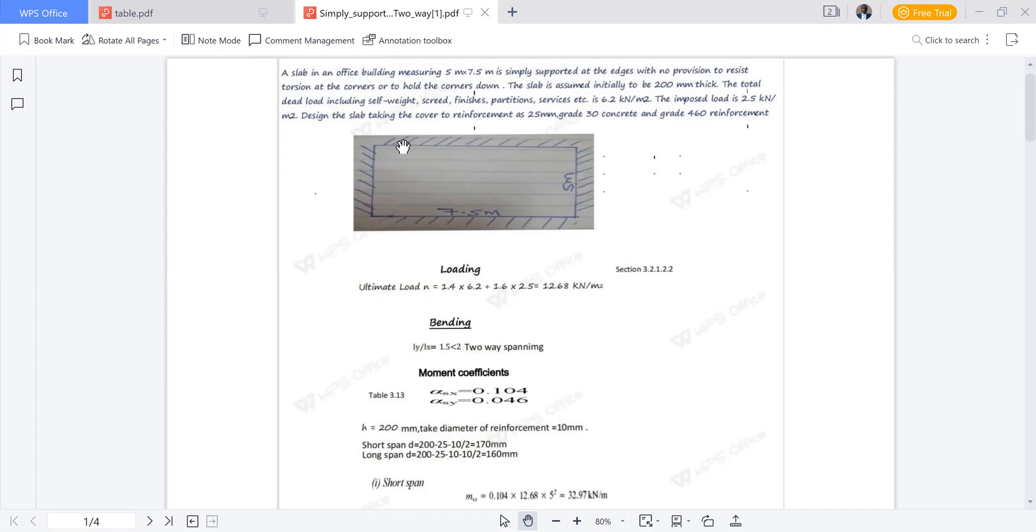This is the diagram to show longer span is 7.5 meter and shorter span is 5 meter. Now we'll go to loading. From table 2.1 of BS8110, ultimate loading n, we take the factor of safety 1.4 for dead and 1.6 for imposed load. From the equation we find 1.4 times dead load 6.2 and imposed load 2.5, we get a total of 12.68 kN per square meter.